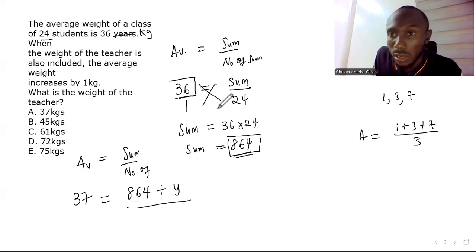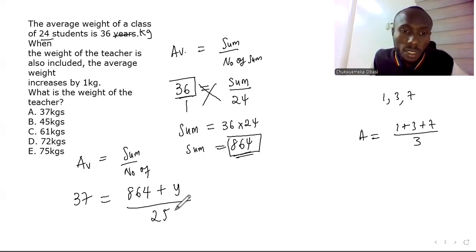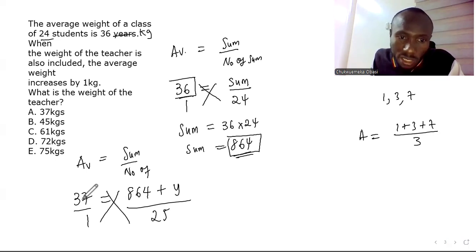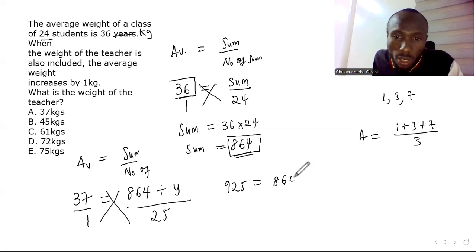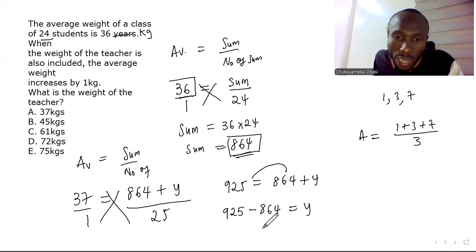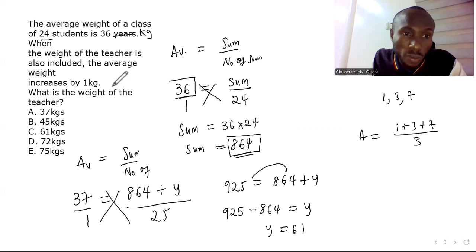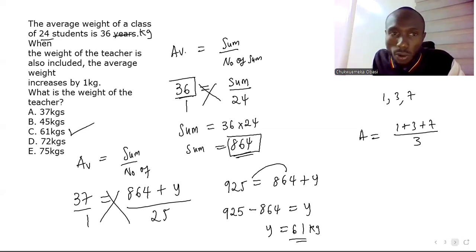Cross-multiplying: 37 × 25 = 864 + y, so 925 = 864 + y, giving y = 925 − 864 = 61. The teacher's weight is 61 kg. The answer is C.